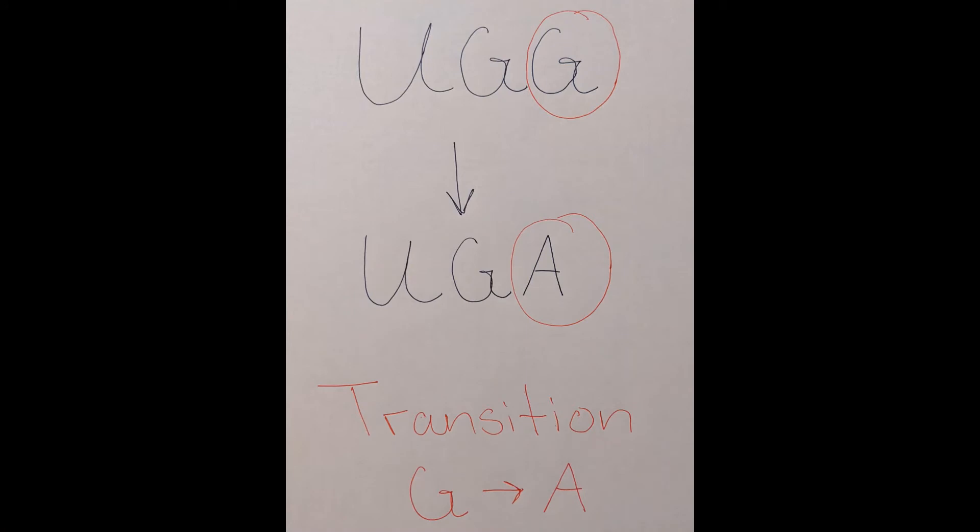In this mutation, you see that a guanine was substituted for an adenine. This is a transition mutation because a purine was substituted for a purine. The amino acid tryptophan now translates to a stop codon, making the protein non-functional.